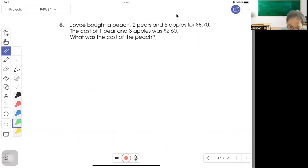Question 6. Joyce bought a peach, 2 pears, and 6 apples for $8.70. The cost of 1 pear and 3 apples is $2.60. What was the cost of the peach?